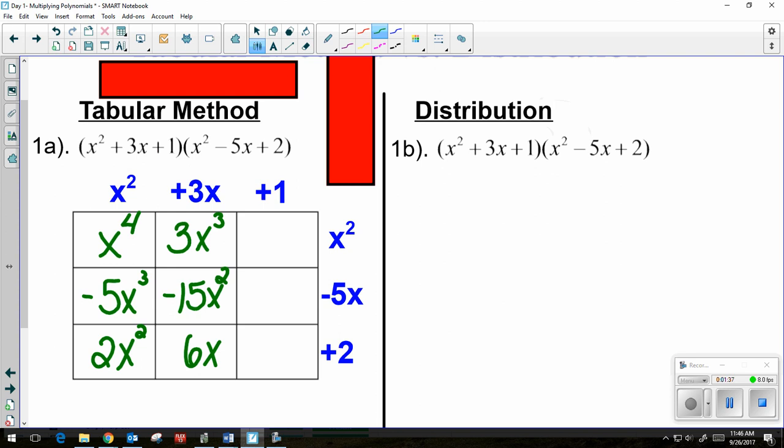And then I go to my plus 1. So 1 times x squared is x squared. 1 times negative 5x is negative 5x. 1 times 2 is 2.